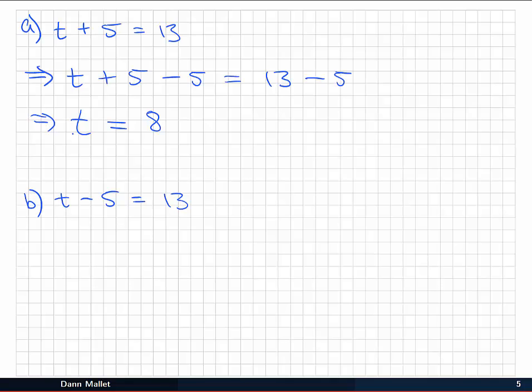t, the variable is isolated by itself on one side, there are no t's on the other side, and I've got my result. t is equal to 8. I can check that by going back to the start and substituting that value in. If t is 8, I have 8 plus 5, which is indeed equal to 13, and the equation is true. So I'm happy with that one.